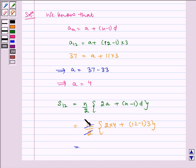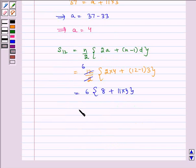Which is equal to, this gets cancelled by 6, so 6 multiplied by 8 plus 11 into 3, which is equal to 6 multiplied by 8 plus 33, which is equal to 6 multiplied by 41, which is equal to 246.